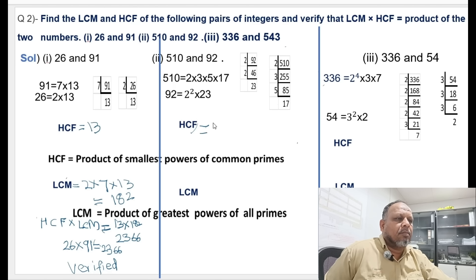For LCM, you have to use the bigger power. So LCM will be equals to 2 square multiplied by 3 multiplied by 5 multiplied by 17 multiplied by 23.